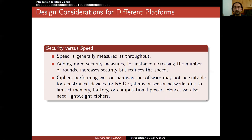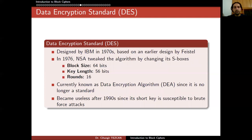Currently NIST is performing a standardization process — a competition is ongoing — and at the end, one or more lightweight ciphers will be standardized by NIST, which will probably conclude in two or three years.